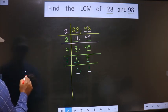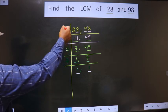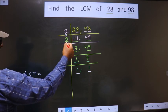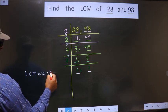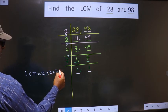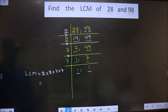Now our LCM is the product of these numbers: 2 times 2 times 7 times 7. Let us multiply all these numbers.